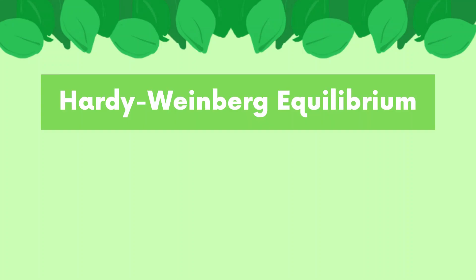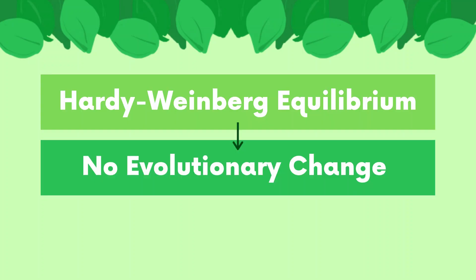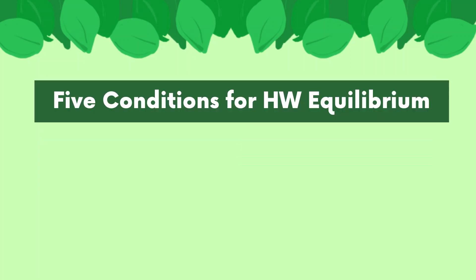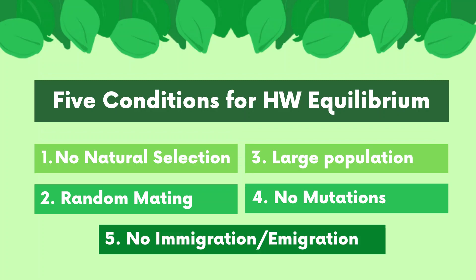Hardy-Weinberg equilibrium describes an environment where there is no evolutionary change occurring. In order for a population to be in Hardy-Weinberg equilibrium, allele frequencies must stay constant across generations. There are five conditions that must be met in order for a population to be in Hardy-Weinberg equilibrium.